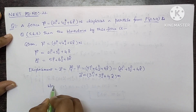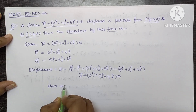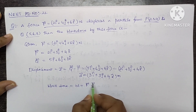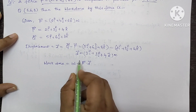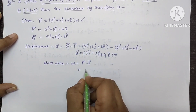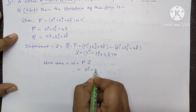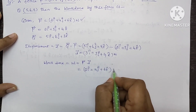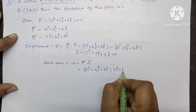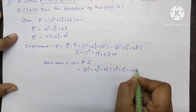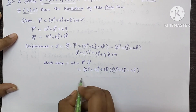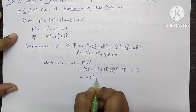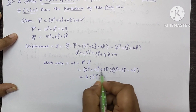Let's see the work done. The formula for work done is W equals F dot d. So let us find the dot product. I hope this is clear to you.